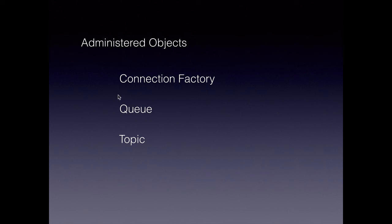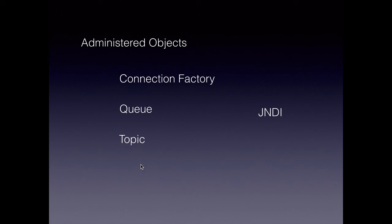The queue, as you already know, is the destination in P2P or point-to-point communication. In the publish-subscribe model, the destination is called a topic. All these administered objects, once deployed, are usually available through a JNDI name. When we create scripts to set these up on WebSphere, WebLogic, Sonic MQ, or any message-oriented middleware software, we expose them as a JNDI entry so that our Java EE applications can look them up and start sending and receiving messages.